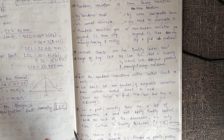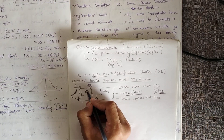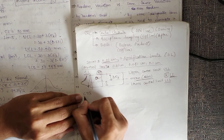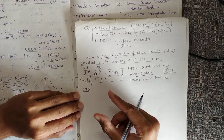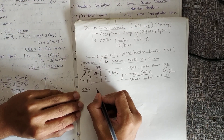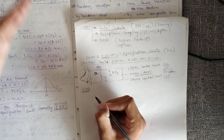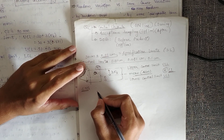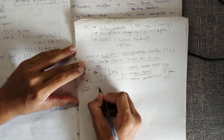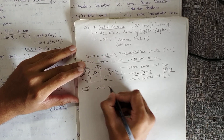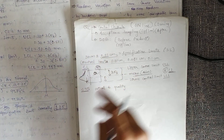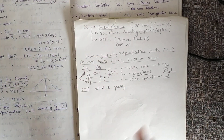How do we determine what parameters or dimensions to check? There is a concept called Critical to Quality (CTQ). A simple part like a nut or bolt has many parameters, but not all are critical to quality. We identify the critical-to-quality parameters and only check those dimensions — we do not check all parameters.